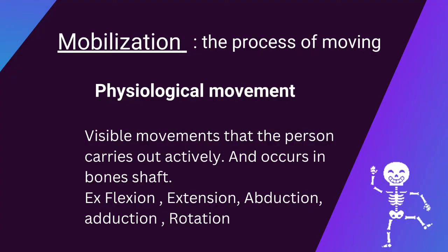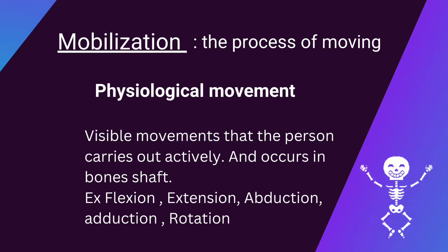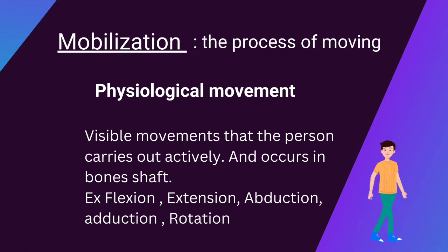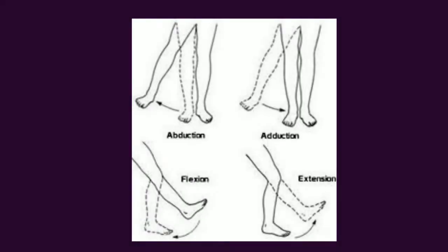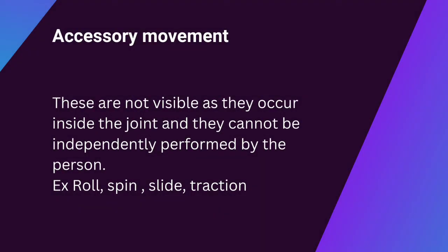Mobilization is the process of moving, and in this we have two types of movements: physiological movements and accessory movements. Physiological movements are visible movements that the person carries out actively and occur in the bone shaft — examples include flexion, extension, abduction, adduction, and rotation.